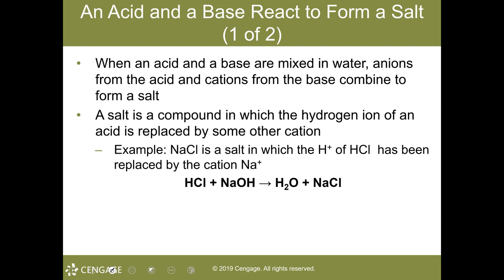When an acid and a base are mixed in water, we get anions from that acid and cations from the base, and they combine to form a salt. That salt is that compound in which the hydrogen ion of the acid is replaced by some other cation. Sodium chloride is a salt when the hydrogen ion of hydrochloric acid has been replaced by the cation sodium.